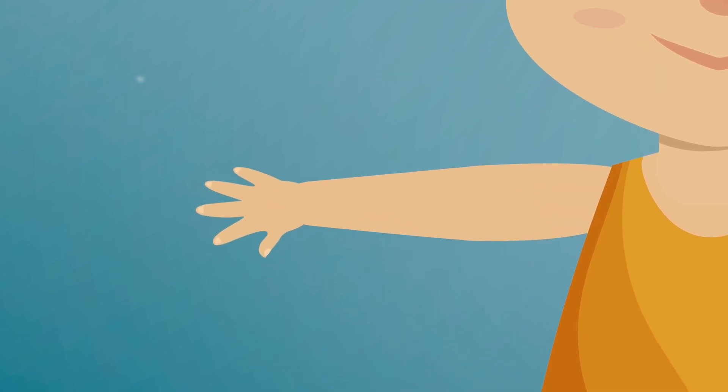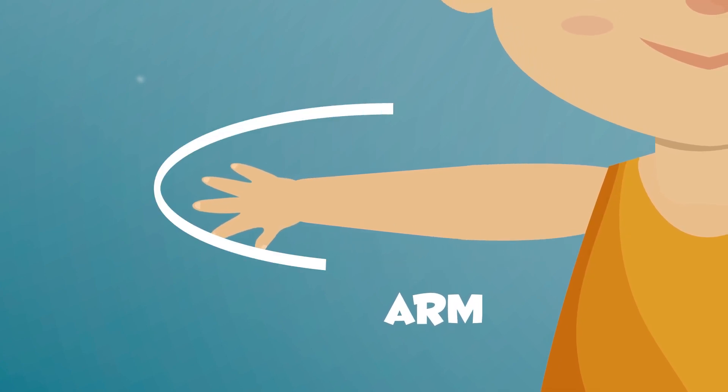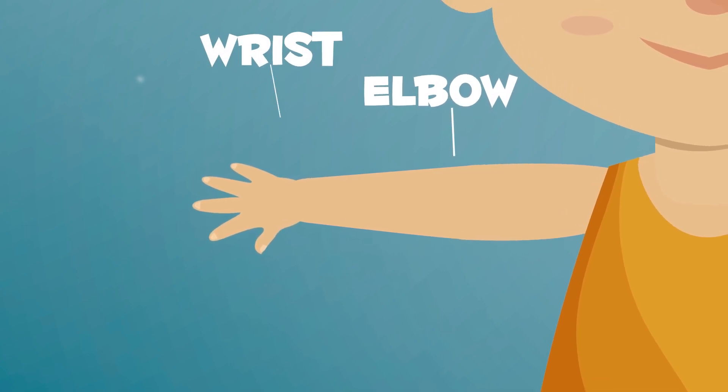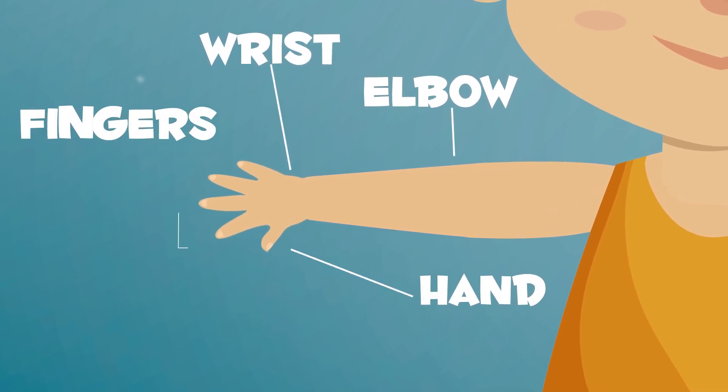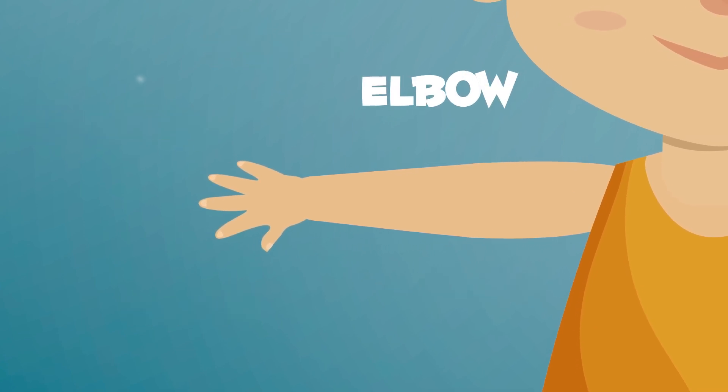Your upper limbs are your arms. Your arm is connected to the trunk by your shoulder. You can find your elbow, wrist, hand, fingers, and nails on your arm. Your elbow is a joint. You can bend your arm with it.